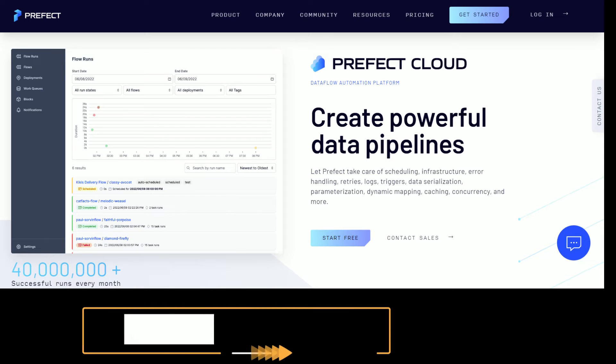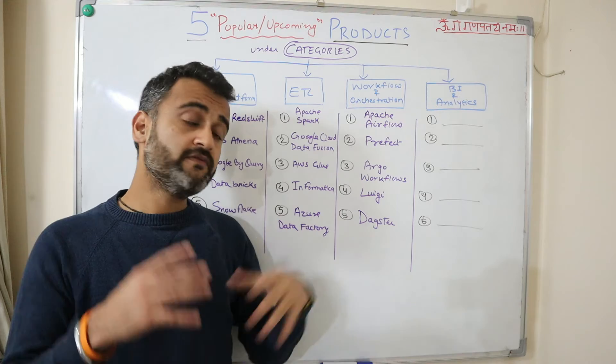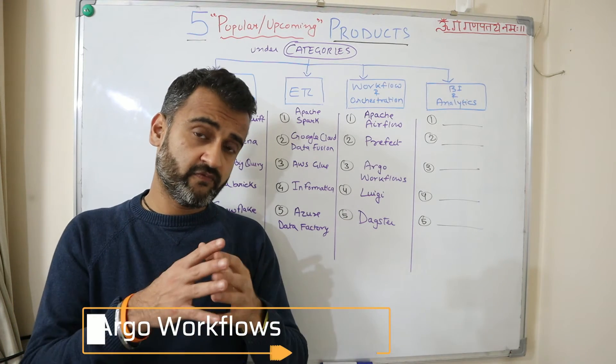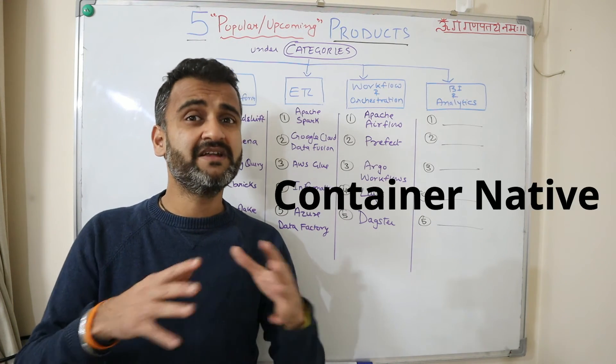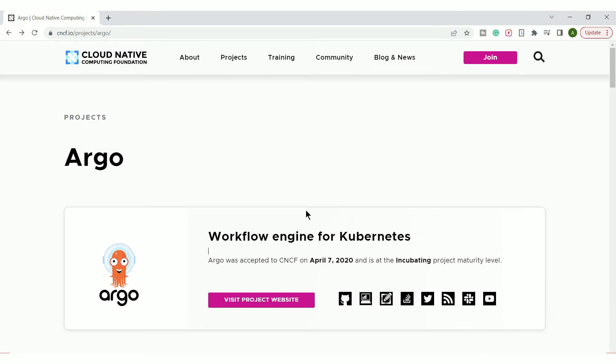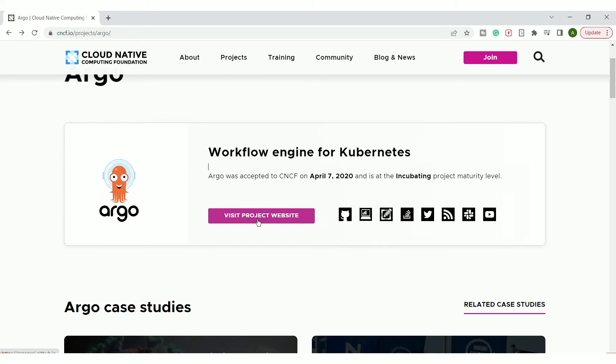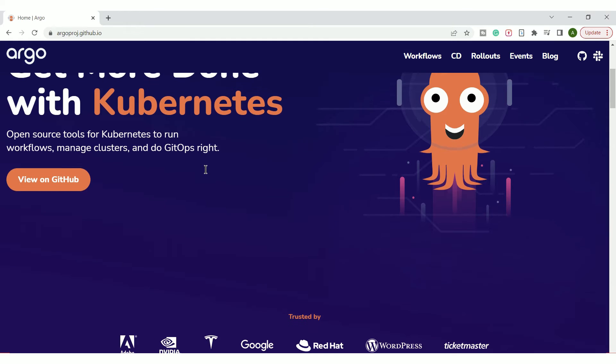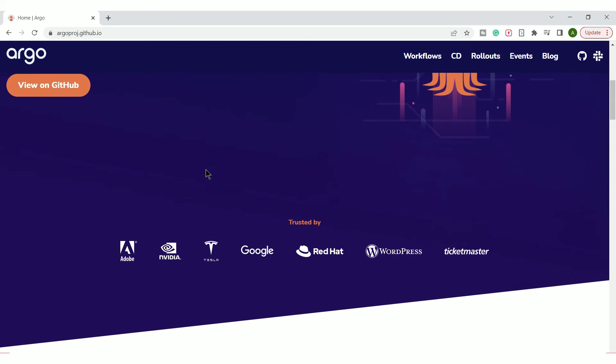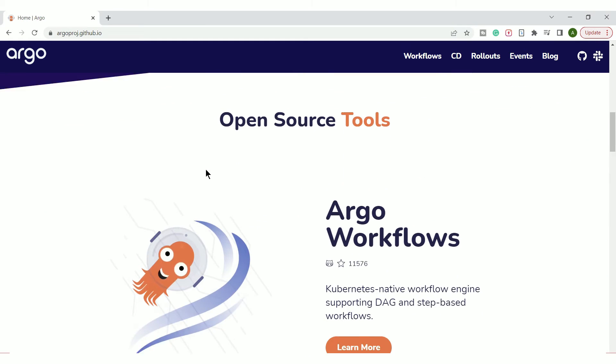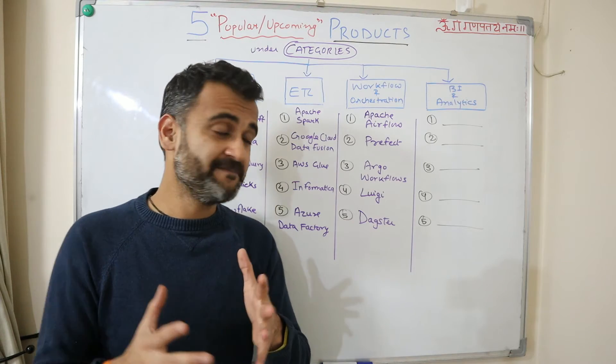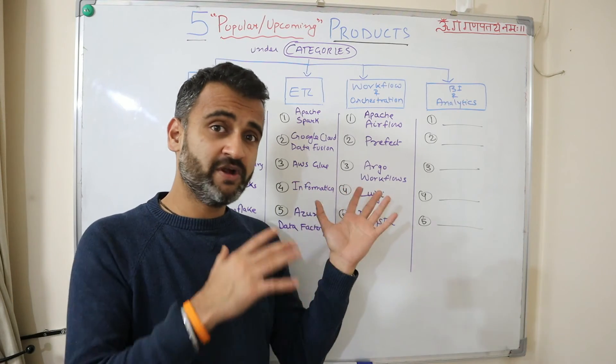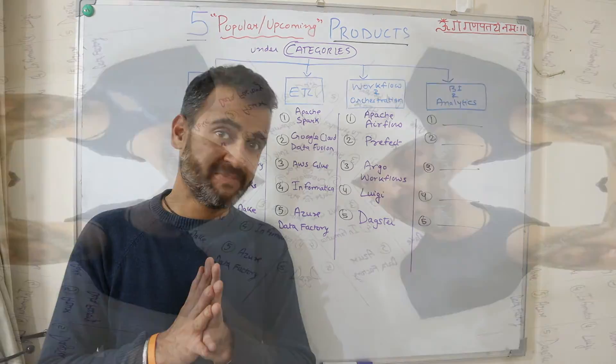Prefect is very similar to Apache Airflow so we don't go into that much detail. Argo Workflows I found interesting with whatever I have learned about this product. It is container native orchestration product which runs on Kubernetes. Whatever workflow you are creating or whatever DAG you are creating, every step is actually being wrapped in a container and then eventually getting orchestrated under Kubernetes. It's an interesting offering and it completely runs on a container native environment.